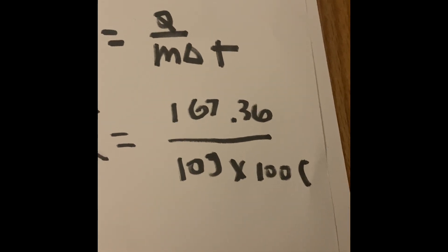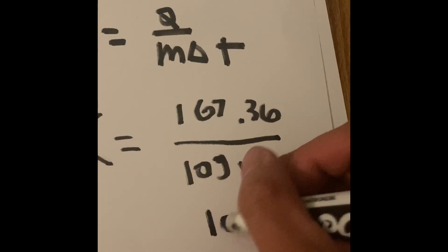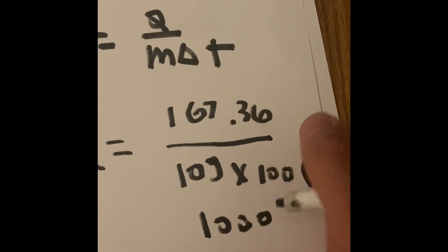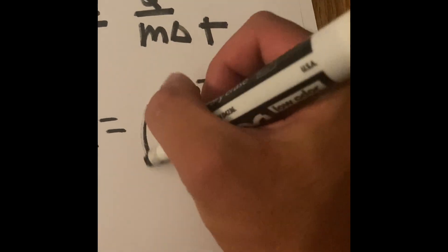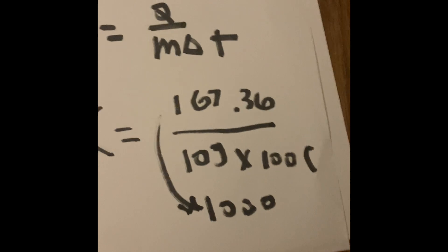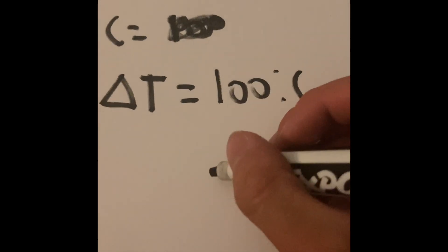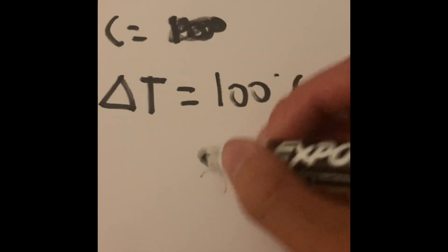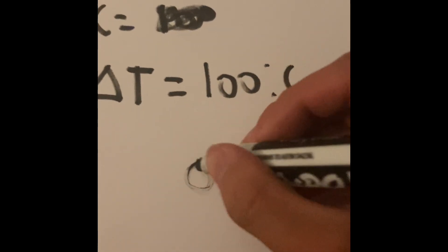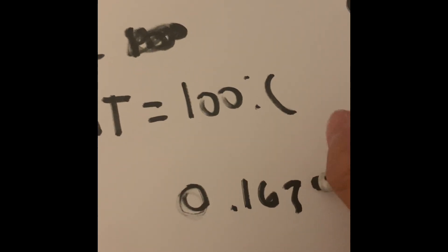Now we can do the formula. 10 times 100 is 1000. And when you do 167.36, divide that by 1000, and you will get an answer. The specific heat of the cube is 0.167.36.